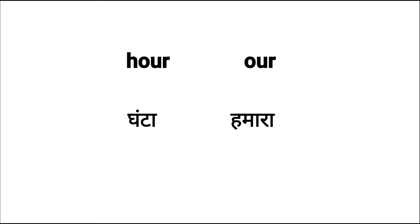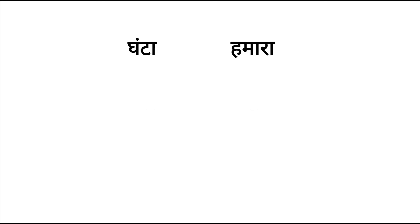Now we have 'hour' and 'our.' Dono ka pronunciation hai 'our.' But of course, different meaning and spellings. Kuch students O-U-R ko 'our' padhate hai — it is not 'our,' it is 'our.' For example: our country.